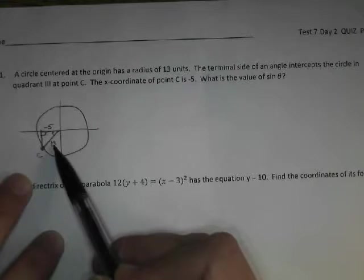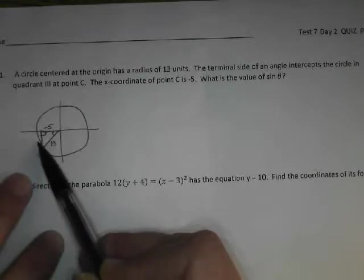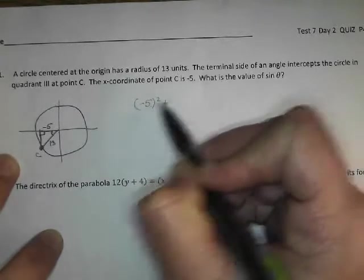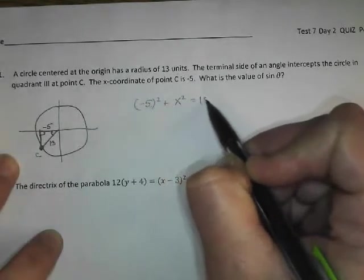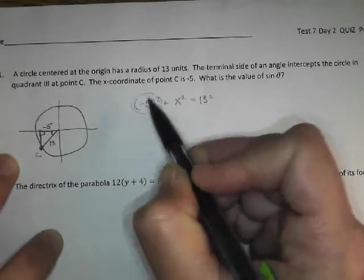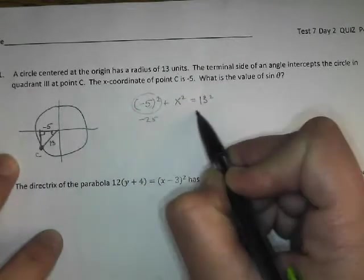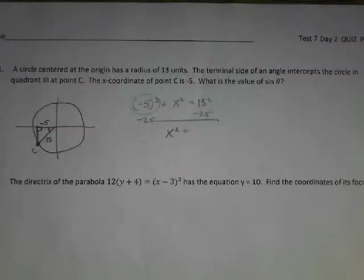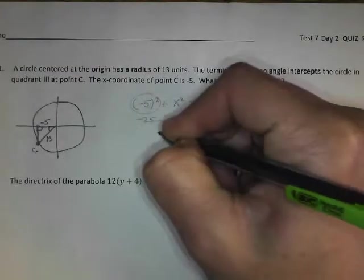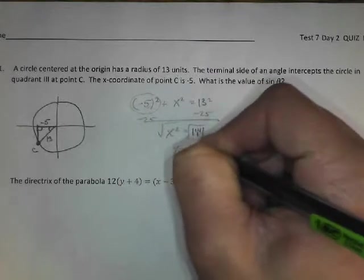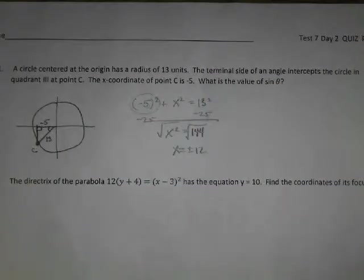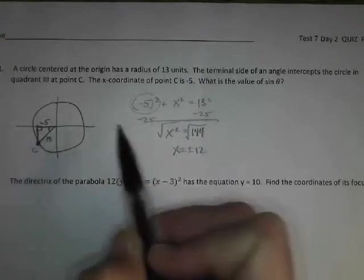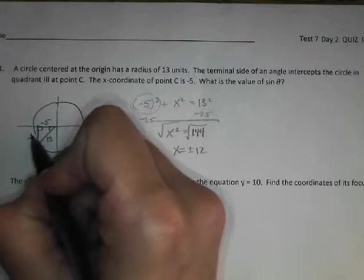Sine is opposite over hypotenuse. I need to know what my opposite is. So the Pythagorean theorem, negative 5 squared plus x squared equals 13 squared. This is the same thing as 25, so if I subtract 25 from both sides, x squared equals 169 minus 25, that is 144. And then when you take the square root of both sides, x equals plus or minus 12. Which is it? Is this going up 12 or down 12? Down.